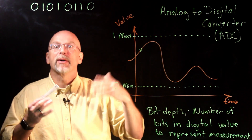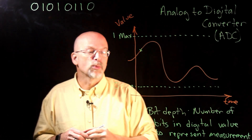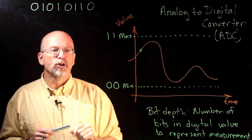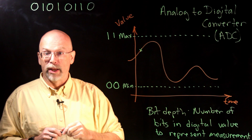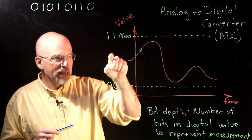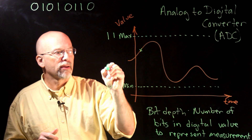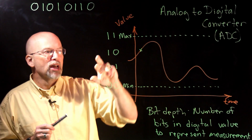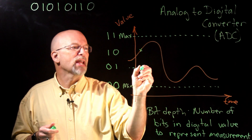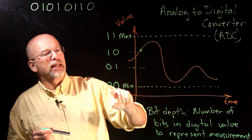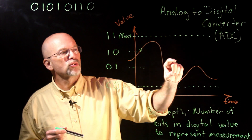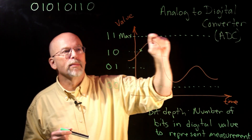We can do better — how about two bits? The minimum is 0,0 and the maximum is 1,1. This gives us two internal levels: 0,1 and 1,0. So instead of just two levels, we now have four patterns of ones and zeros. If we get 0,0 we know we're in this range; 0,1 means this range; 1,0 means this range; 1,1 means this range — a little bit better resolution.